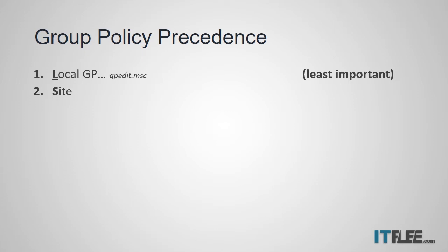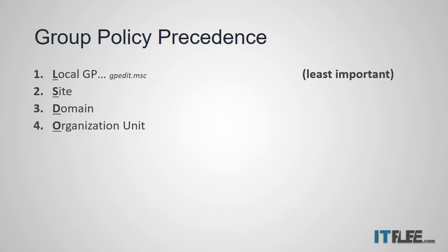So if you configure a desktop wallpaper in the local group policy and you configure it in the site policy, the site policy will take precedence over the local group policy because it was applied after the local group policy. Next in the order is the domain policy, so any policies assigned to the domain will now be applied on top of the site and local settings. Next we have the organizational unit, and this is any GPO that is linked to a specific OU.